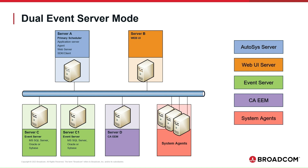When Autosys is configured in Dual Event Server Mode and one event server goes down, Autosys automatically rolls over to the second event server and continues running in Single Event Server Mode. After you recover the failed event server, you can reconfigure Autosys Workload Automation to run in Dual Event Server Mode again. Use the Dual Event Server Mode only when your database doesn't provide high availability.